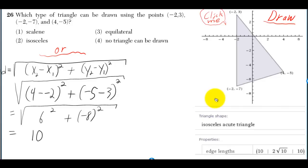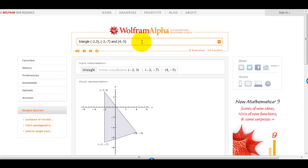The link for Wolfram Alpha is in the description and in the PDF. I typed in triangle and then the points, and it draws the triangle for me.